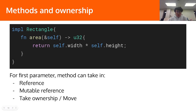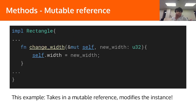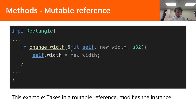However, we can take in a mutable reference if we want to modify the instance of the struct. An example of taking a mutable reference: here I have a method called changeWidth of Rectangle type. The first parameter it takes in is `&mut self`, which is a mutable reference. We need it because we want to set the width — we take the instance and set the width to a new width that we also passed in. To be able to modify the instance, we have to take in a mutable reference.